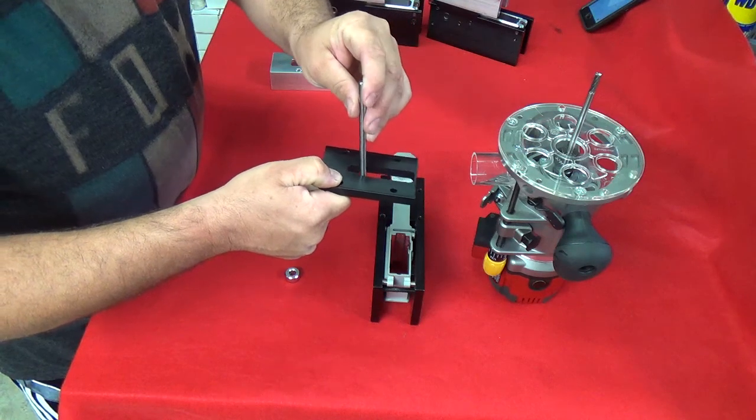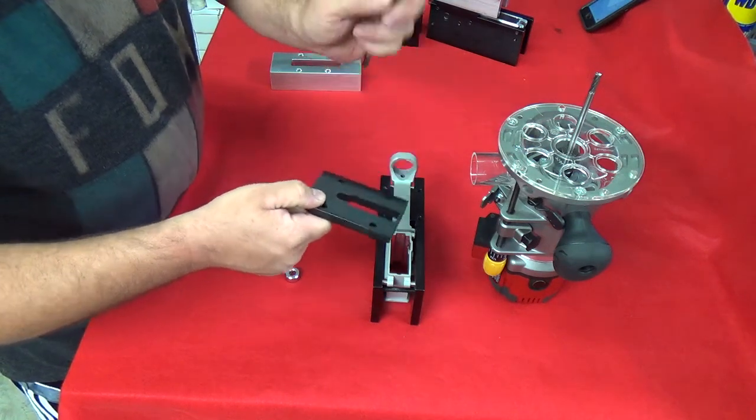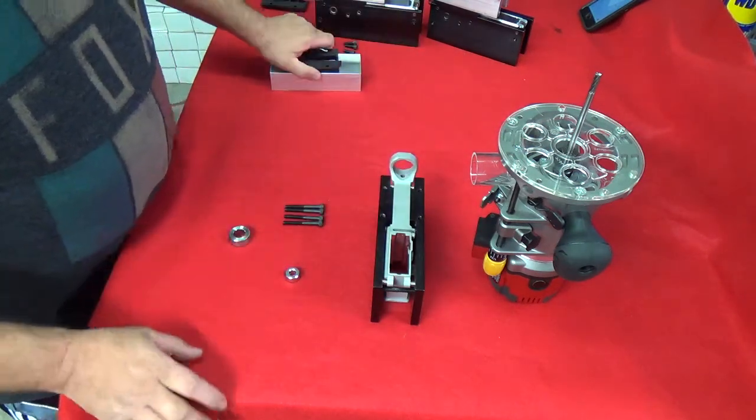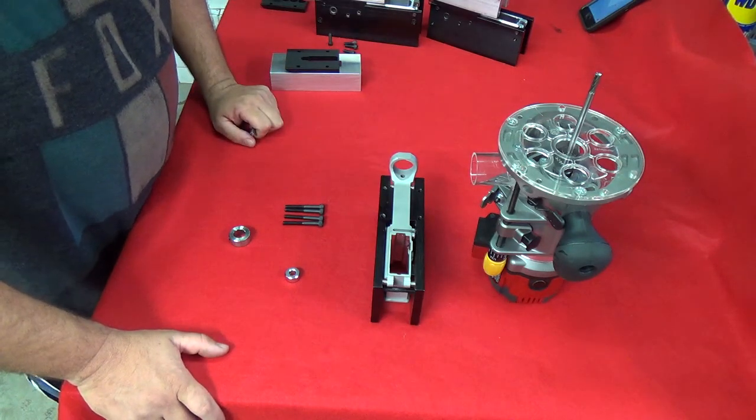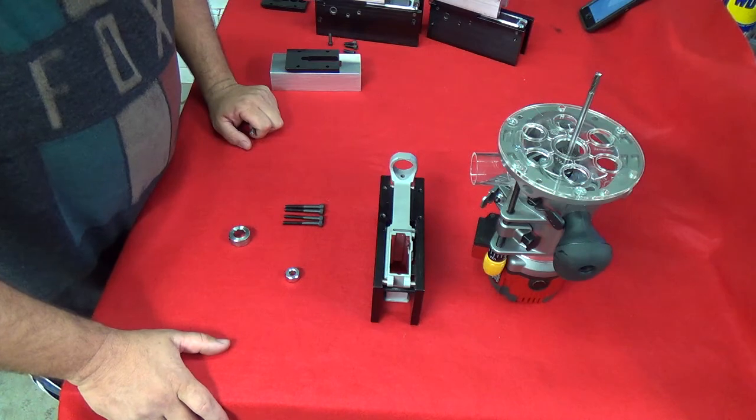As it drops in it's just going to follow the pattern around. Depth is controlled by your router and by measuring it with a micrometer.